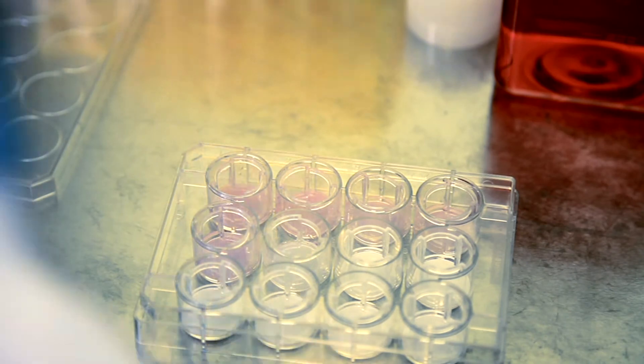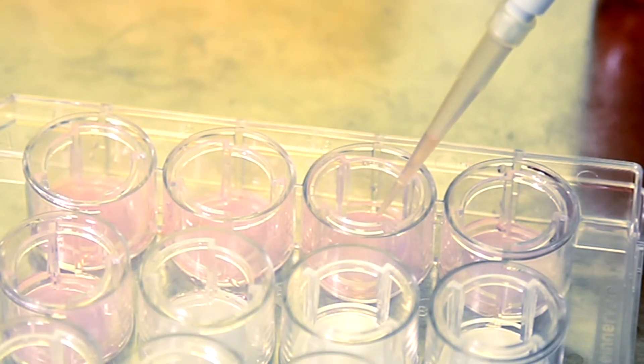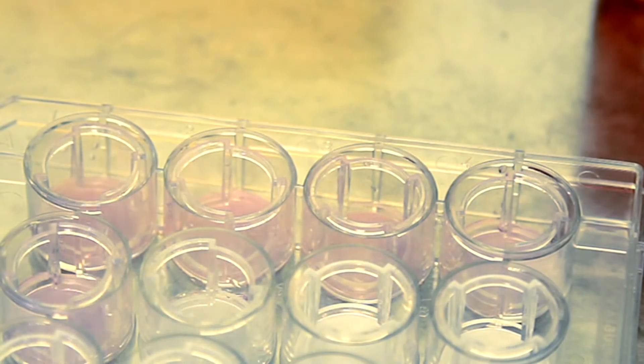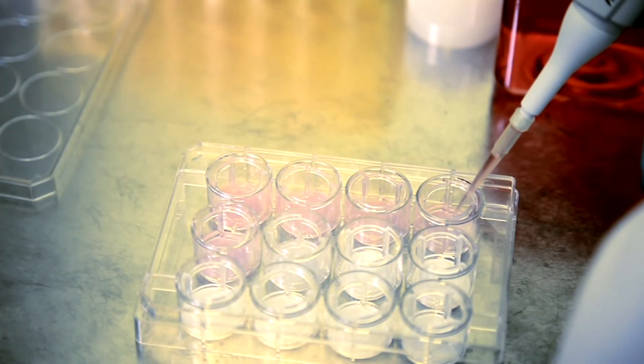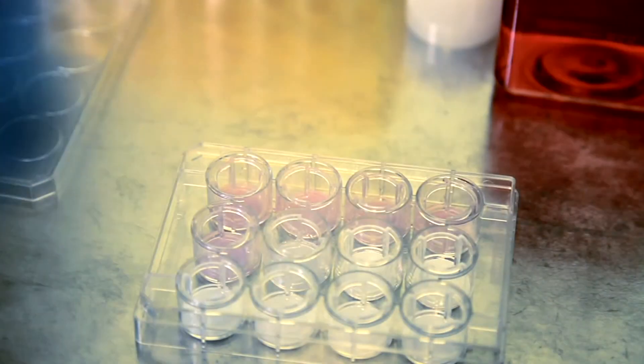When ready, seed the cells on the middle of the disc, being careful not to touch the membrane. 3D cell culture is different from conventional 2D cell culture, as the cell seeding density must be optimized according to the cell type.